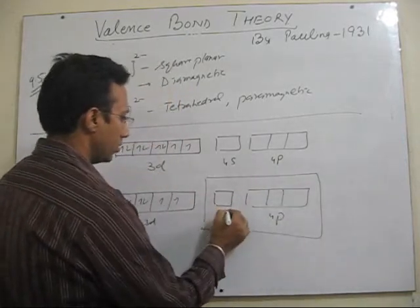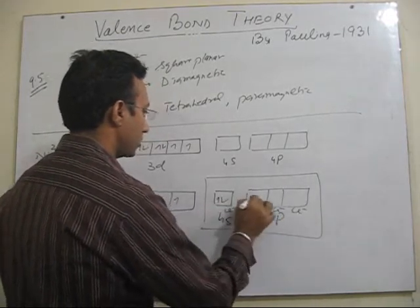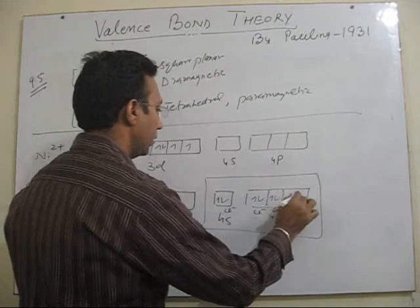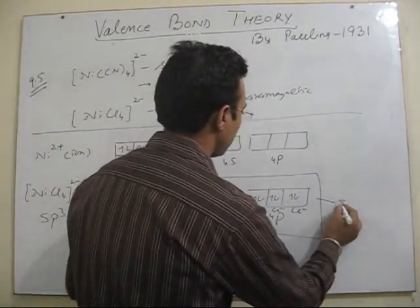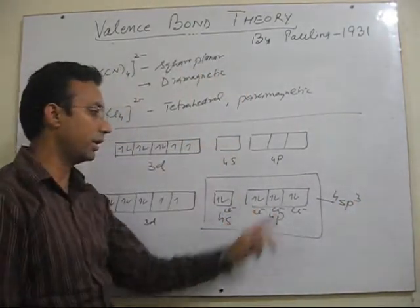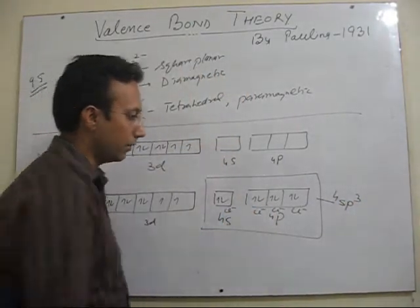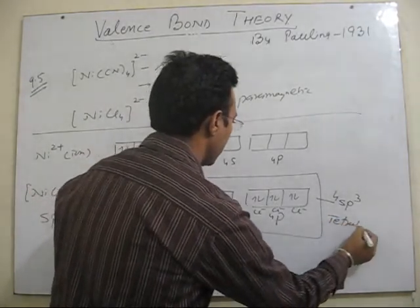Chloride ion will donate their lone pairs to form 4 nickel chloride coordinate bonds. We get 4 SP3 empty hybridized orbitals in which chloride ion will donate their electron pairs. So here the shape will be tetrahedral.